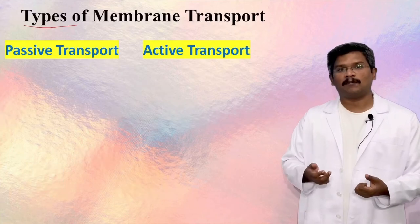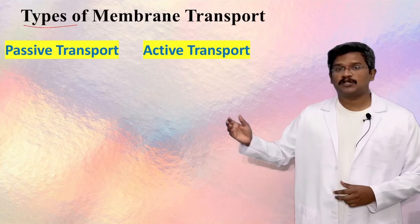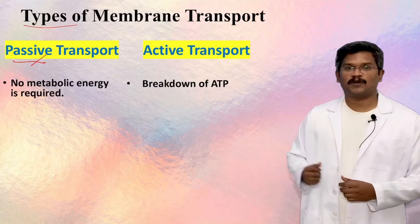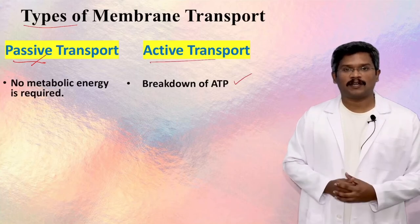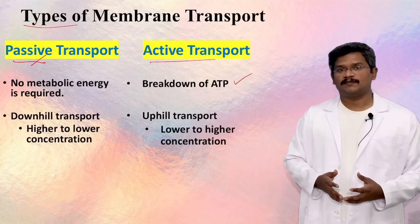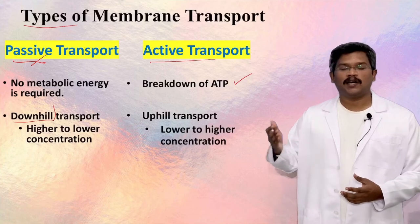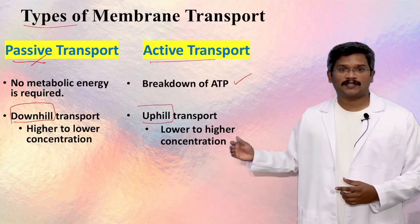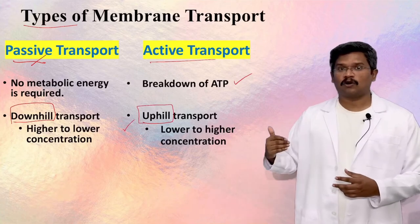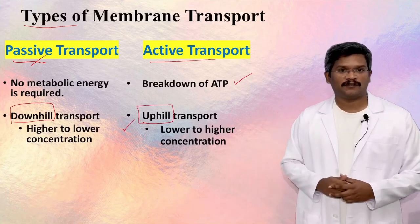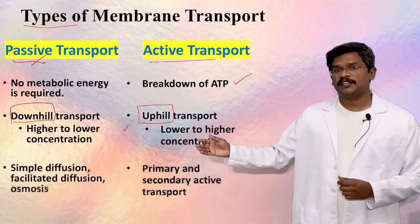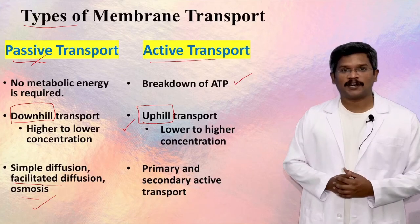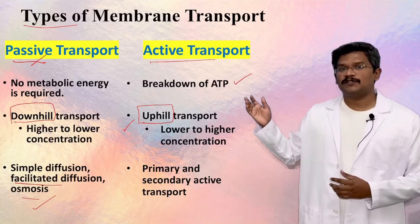Passive transport mechanisms do not require metabolic energy, while active transport mechanisms require metabolic energy. Passive mechanisms can transport only downhill—from high concentration to low concentration—whereas active transport mechanisms can do uphill transport from low to high concentration. Simple diffusion, facilitated diffusion, and osmosis are topics in passive membrane transport. Active transport is divided into primary and secondary active transport.